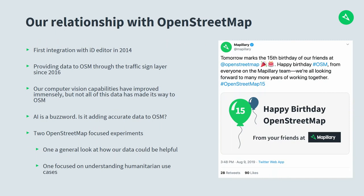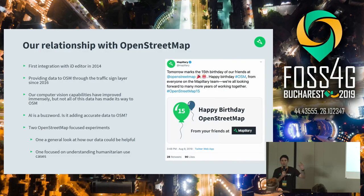We started in 2013, and very early on in 2014 we made an integration for iD Editor, which is one of the editing tools in OpenStreetMap, so people could see imagery while editing the map. Then in 2016 we took our computer vision capabilities — where we can identify things like traffic signs automatically — and made that available to OpenStreetMap. It complies with the OpenStreetMap database license, so you can take this data and make edits as long as they're going to OpenStreetMap.